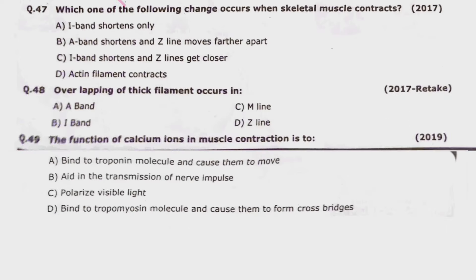Question 47: Which one of the following changes occurs when skeletal muscle contracts? Alpha — I band shortens only; beta — I band shortens and Z lines move further apart; charlie — I band shortens and Z lines get closer; or delta — actin filament contracts. Correct option is charlie — I band shortens and Z lines get closer. Question 48: Overlapping of thick filaments occurs in the A band, I band, M line, or Z line. Correct option is alpha — A band.